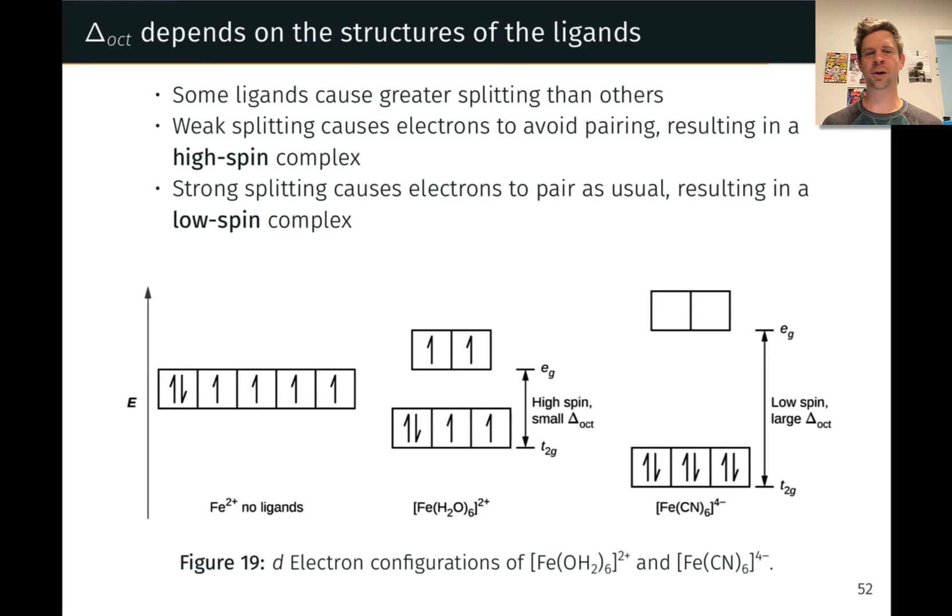Crystal field theory is a model that describes the electronic structure of the d electrons within transition metal complexes, using this idea that the field of negative point charges created by the ligands will perturb the energies of the d electrons.